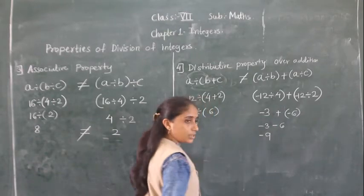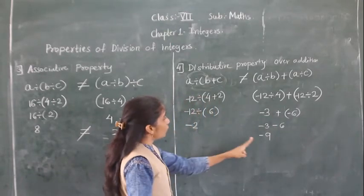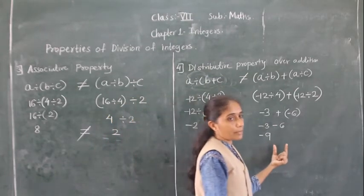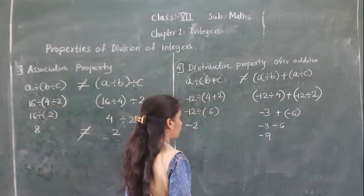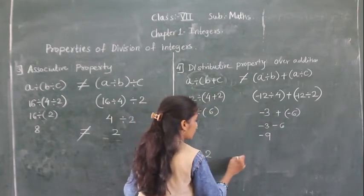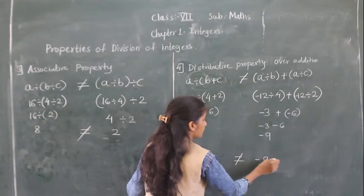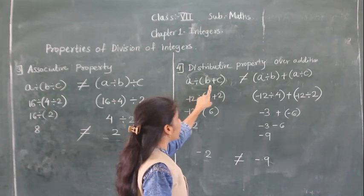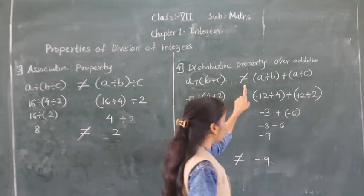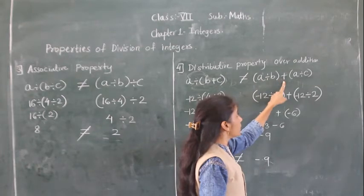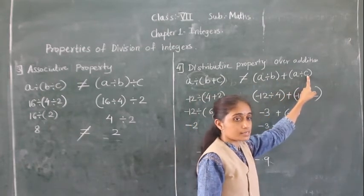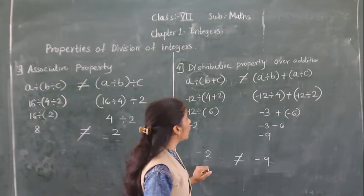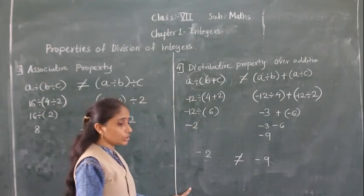Now solving the right side: A divided by B plus A divided by C gives minus 12 divided by 4 plus minus 12 divided by 2, which equals minus 3 plus minus 6 equals minus 9. Since minus 2 is not equal to minus 9, this property does not hold in division of integers.